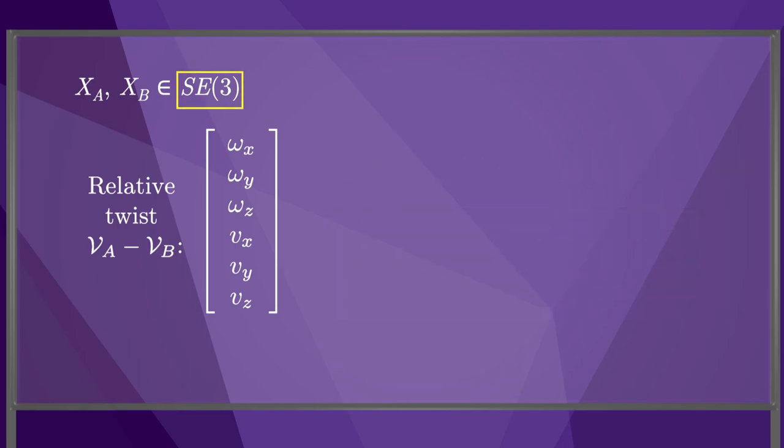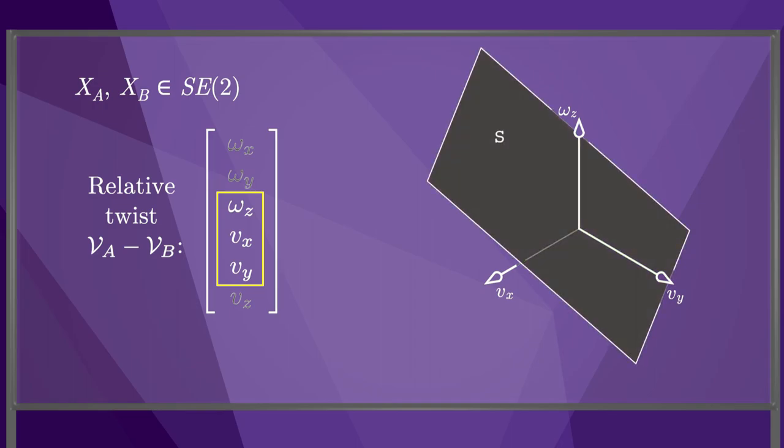If, instead, the bodies are restricted to a plane, the relative twist is a three-vector, which we can draw in a three-dimensional space. In this case, the plane of twists that cause a sliding contact, marked S, divides the three-dimensional space into a half-space of twists that break contact, marked B, and a half-space of twists that cause penetration. The line of twists that cause rolling, marked R, lies in the S-plane.